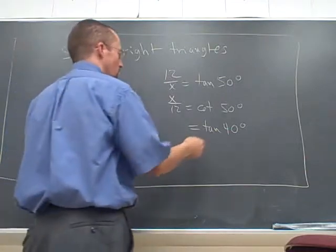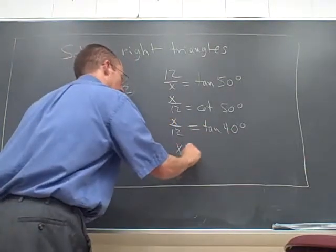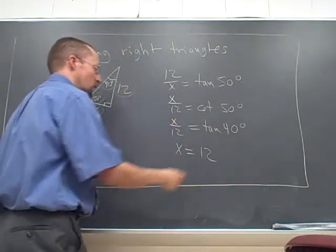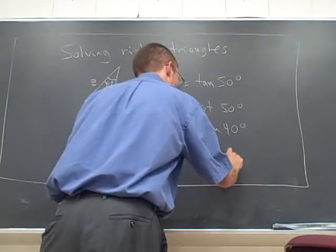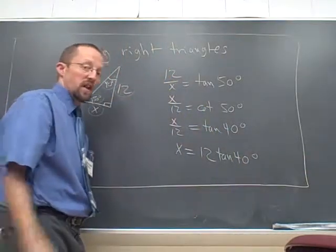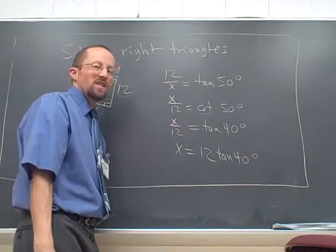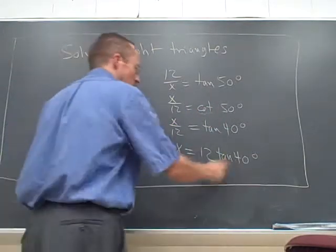So anyway, any one of them would work. This is probably the easiest, actually. Tan has a button on the calculator, and I don't have to do any weird algebra. Cotangent isn't such a great thing to deal with because it's not a button on the calculator. So tangent's a little preferable.